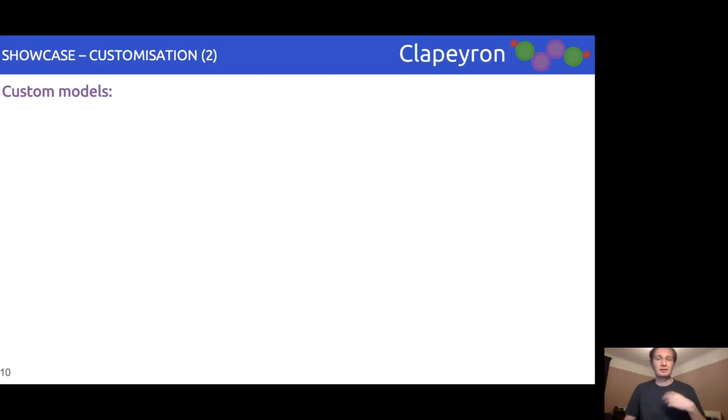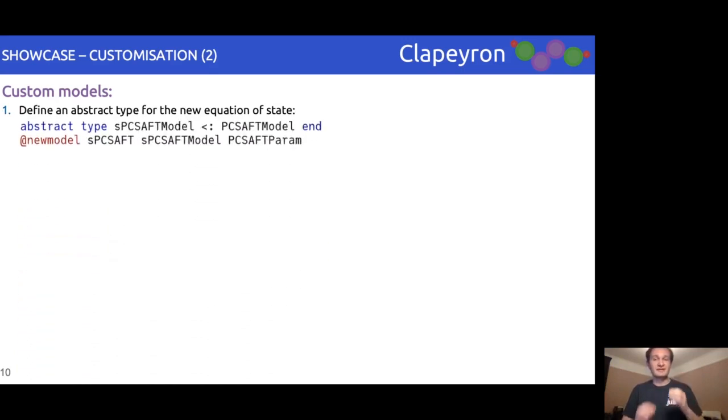Finally, the last aspect we allow for customization of is the models and equations themselves. We make full use of Julia's multi-dispatch features in this instance. Firstly, we need to define the new model as its own abstract type. This can be a brand new equation or one based on an existing one.